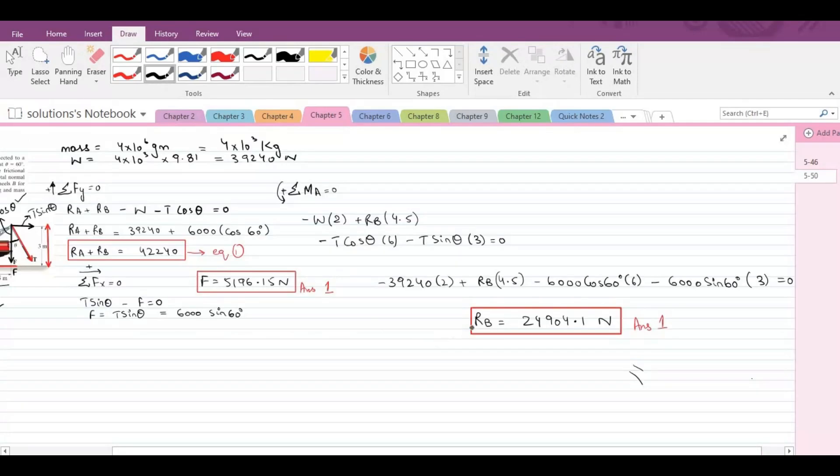Now I can substitute this value of RB into equation 1 to calculate the value of RA. So from equation 1, RA is equals to 42,240 minus RB that is 24,904.1. So from here RA comes out to be 17,335.9 newtons. So this is our third answer.